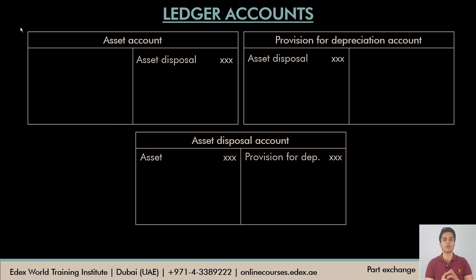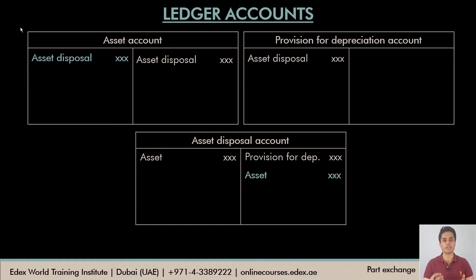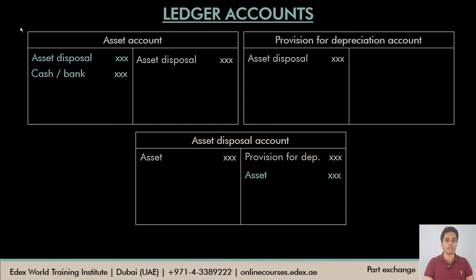The first step is to record the value of the old non-current asset — the amount the supplier has deducted from the cost of the new asset — on the credit side of the disposal account and on the debit side of the asset account. The difference paid by cash or cheque for the new non-current asset is recorded on the debit side as cash or bank. These are the changes to the ledger accounts when a part exchange transaction appears in the question.